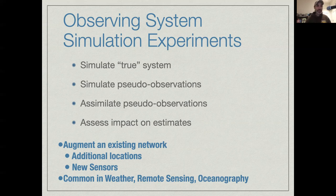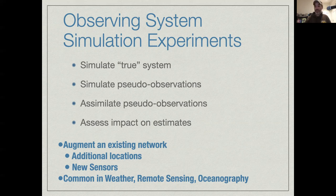That wraps up this section on uncertainty. To recap: we started with the question of sensitivities — how do changes in x affect y. We translated that into how uncertainties in x affect uncertainties in y, talked about identifying the most important sources of uncertainty, and now we've discussed how to design studies to reduce uncertainties most efficiently and get the most bang for our buck.